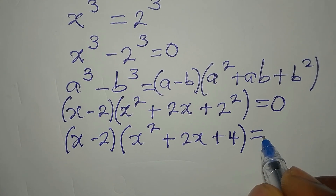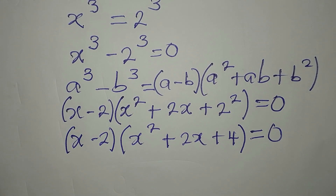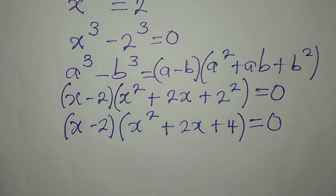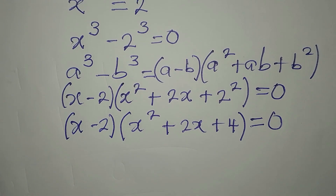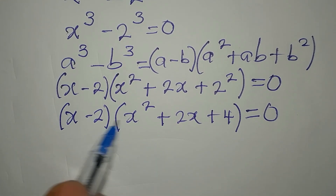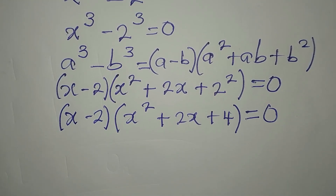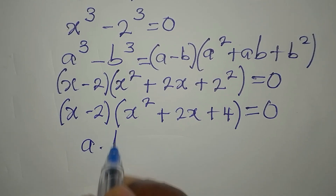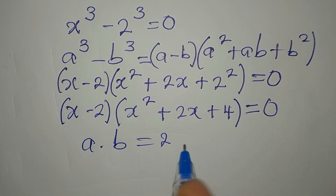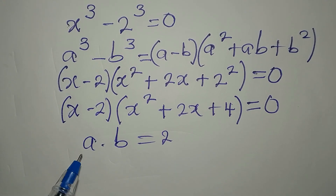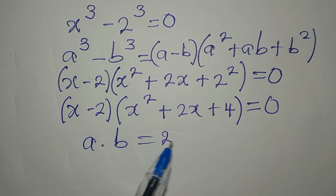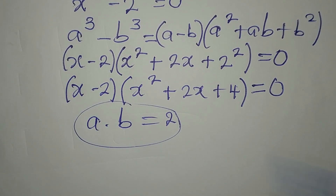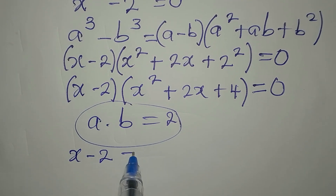Since we are multiplying these two factors to get zero, either of them must be equal to zero. This is called the zero product rule. Note that if you have a times b equal to 2, you cannot say a equals 2 or b equals 2 — that is not allowed. You can only do that if the product is zero.